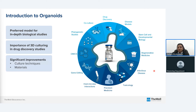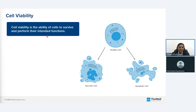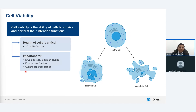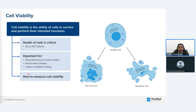While culture techniques and 3D culture materials have tremendously improved over the past few years, some areas like cell viability testing in 3D structures like organoids require further improvements. Cell viability can be simply defined as the ability of cells to survive and perform their intended functions in a given environment. Whether you are performing 2D, 3D, or advanced drug discovery studies, or basic culture condition testing, the health of the cells you are using will definitely decide the final outcome and success of your experiment. That is why it is important to understand whether the cells are live or dead, which provides primary but critical information about your final outcome.